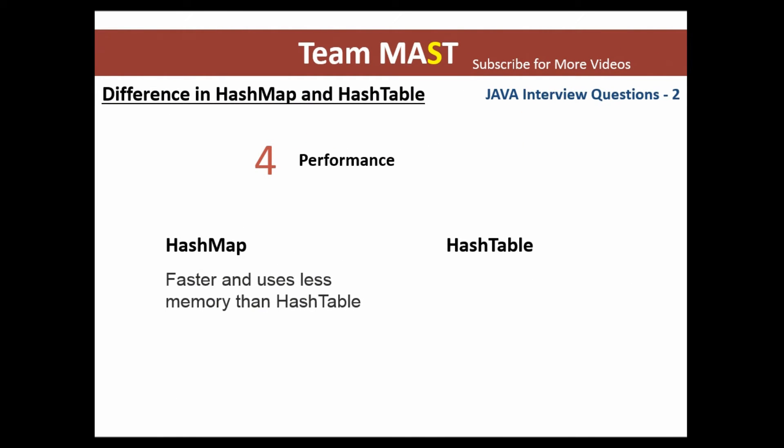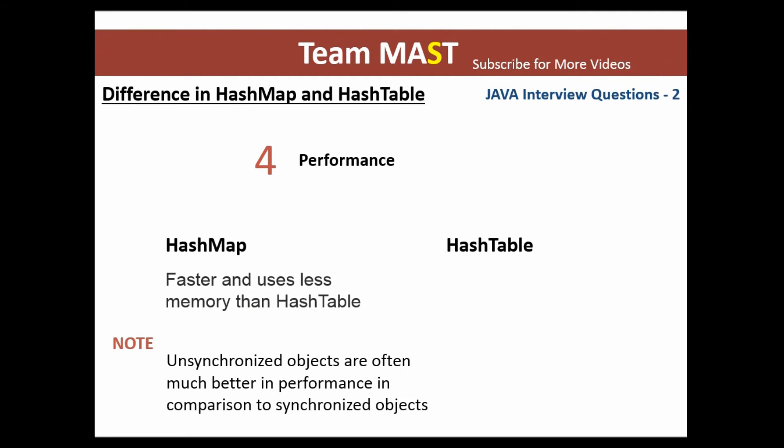The next difference is regarding performance. If you want your application to be faster and use less memory, you should use a HashMap rather than a Hashtable, because synchronized objects are lower in performance as compared to unsynchronized objects.